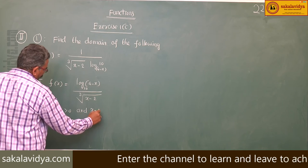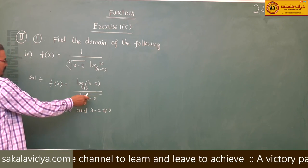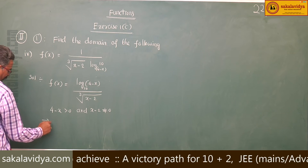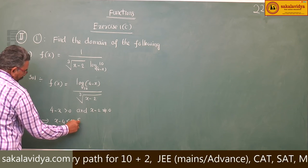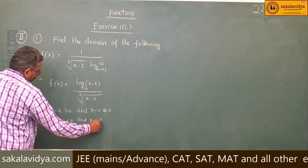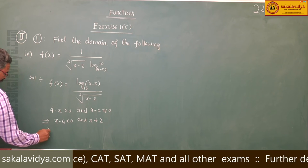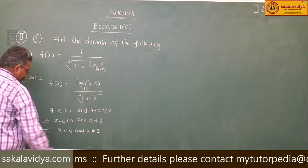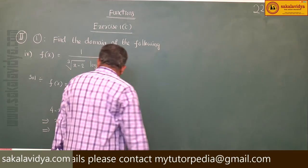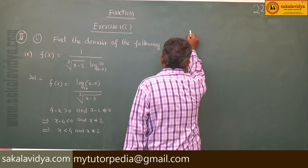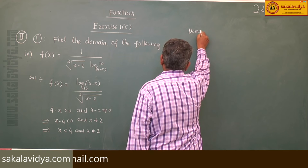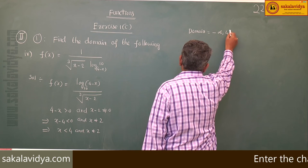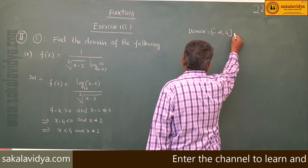To define this function, 4 minus x must be greater than 0, and x minus 2 does not equal to 0 (otherwise the denominator becomes 0). So x less than 4 and x does not equal to 2. Therefore, the domain is minus infinity comma 4 minus the element 2.